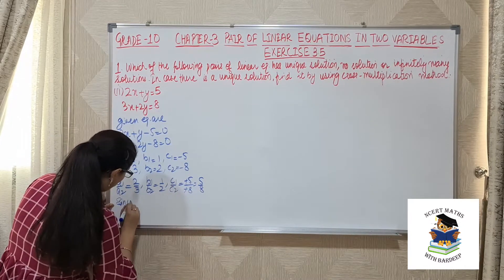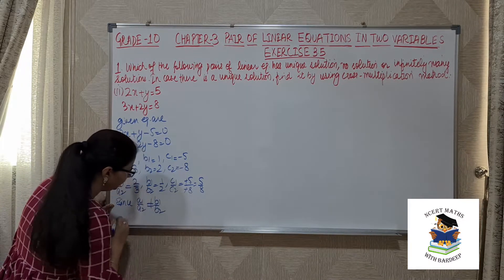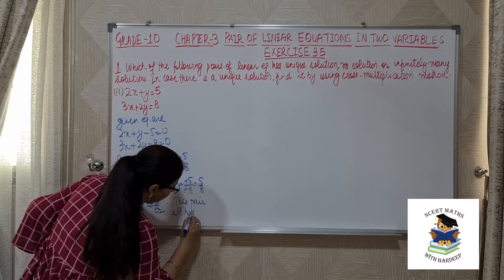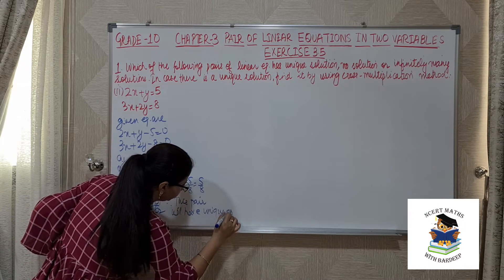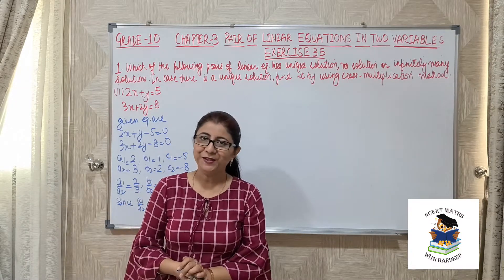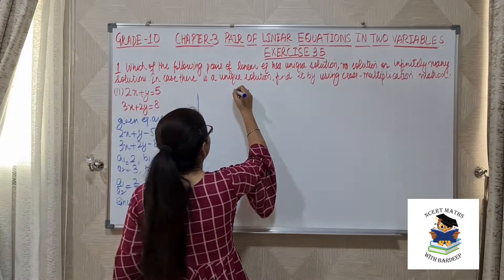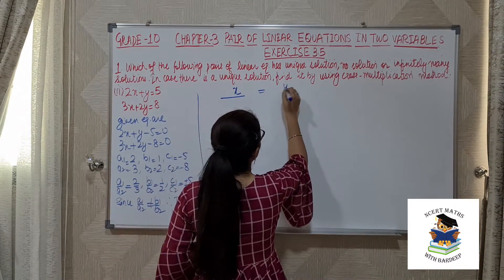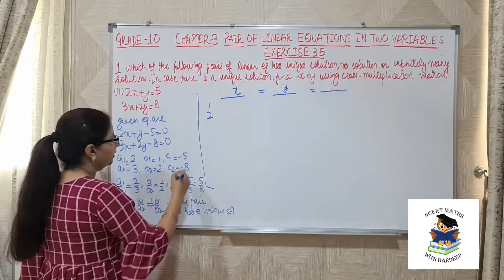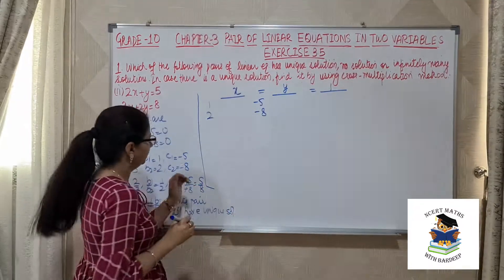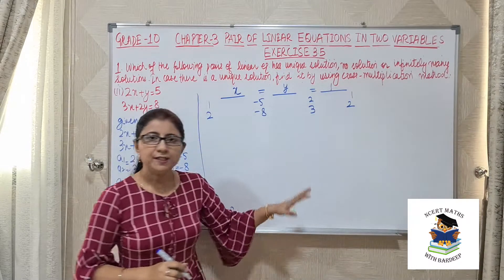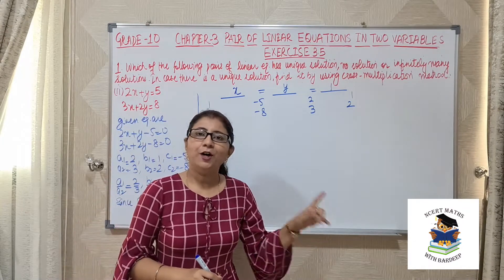Since a1/a2 is not equal to b1/b2, therefore this pair will have a unique solution. Now the second part asks us to find it using cross multiplication. In this method we write x over, then y over, then 1 over. We write b1, b2 which are 1 and 2, then c1, c2 as minus 5 and minus 8, then a1, a2 as 2 and 3, and again b1, b2 as 1 and 2. This method is already explained in the introduction video, so please refer to that if you have any doubts.